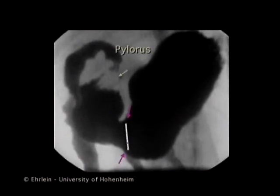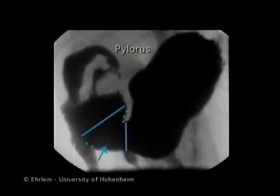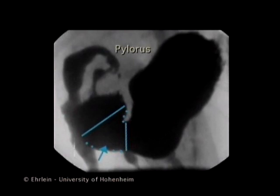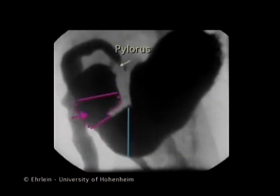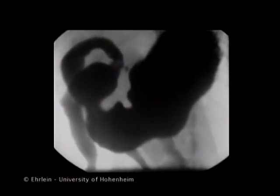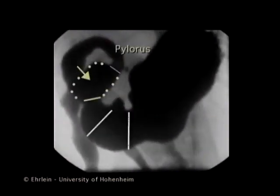At the antrum, three parts can be differentiated: a proximal antrum, a middle antrum, and a terminal antrum.